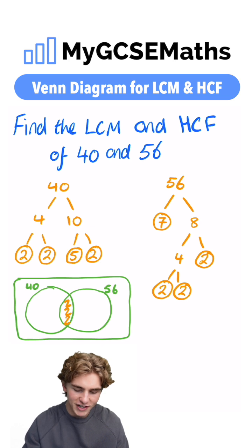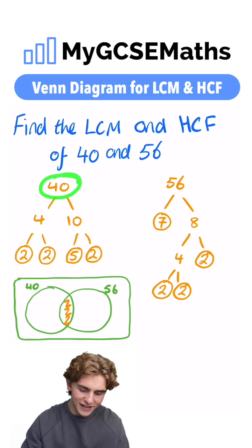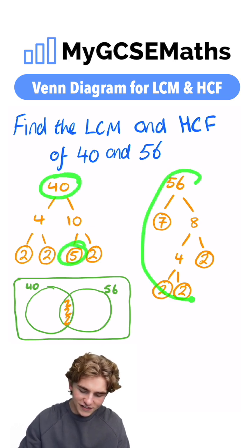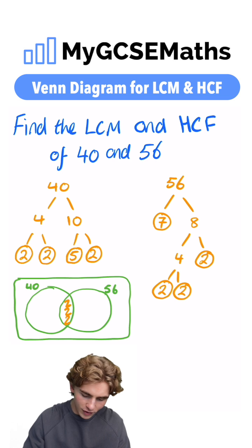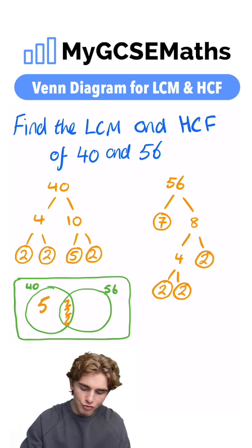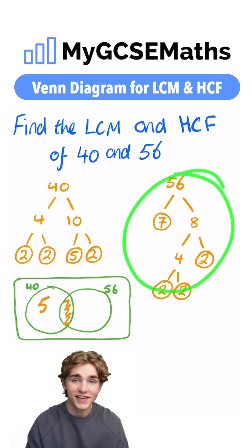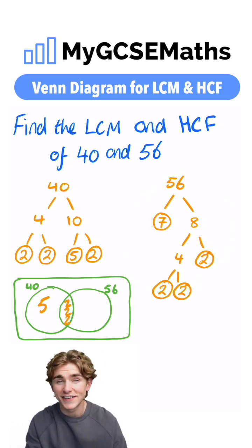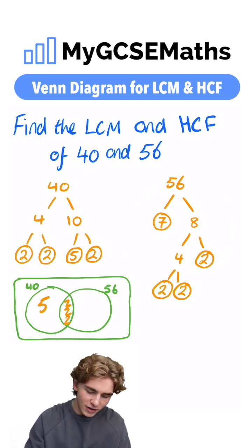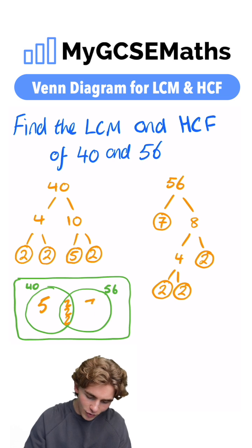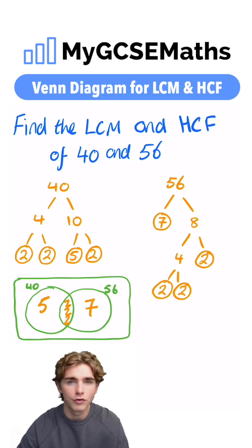On our left-hand section, we can see that 40 has a prime factor of five, but 56 doesn't have a prime factor of five, so we're going to write that on the left. And likewise, on the right-hand side, we can see that 56 has a prime factor of seven, but 40 doesn't, so we're going to write that on the right.